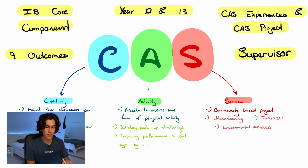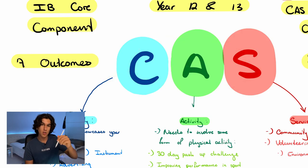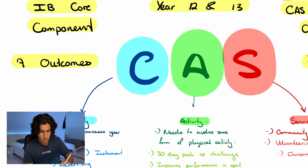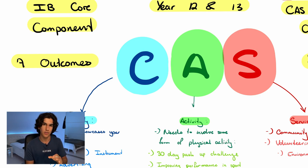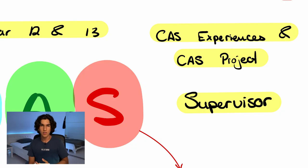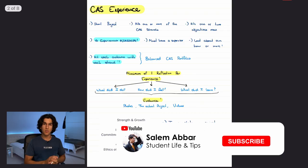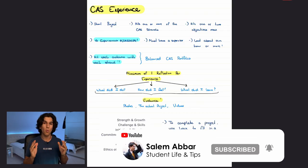CAS aims to achieve seven main outcomes, which are listed on screen. For each CAS experience there's also a supervisor component — to ensure credibility of your CAS work you need a supervisor, an adult watching over you, and also to confirm that you actually completed the project. That was a lot of information at once, but let's look at what you actually need to do in CAS.